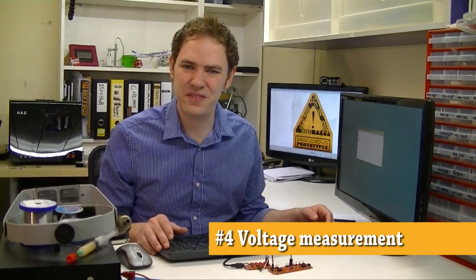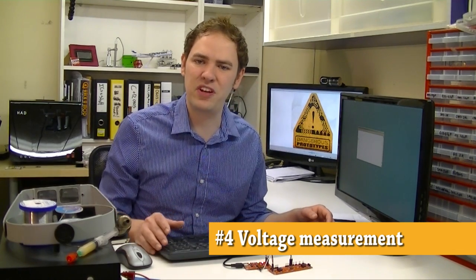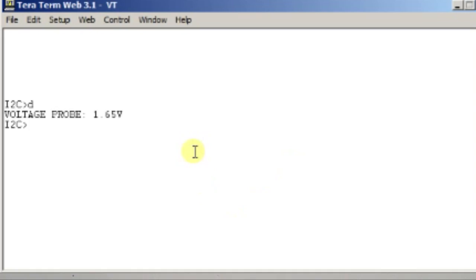First up is the Analog Digital Converter Probe. This is a pin on the Bus Pirate header that can measure voltages up to 6.6 volts. In the terminal, you use D to read the voltage.